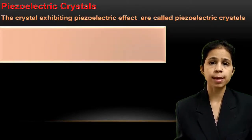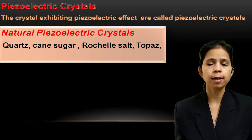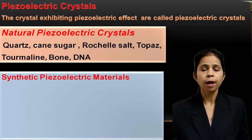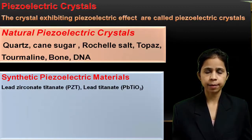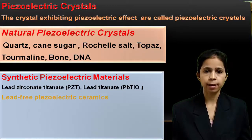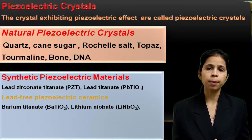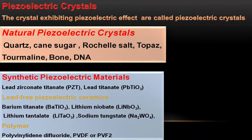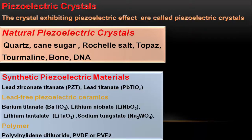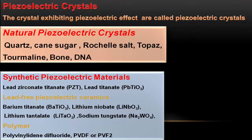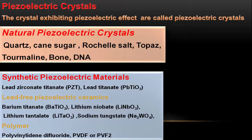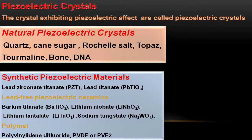Natural piezoelectric crystals include quartz, tourmaline, Rochelle salt, topaz, bone, cane sugar, and DNA. Synthetic piezoelectric materials include lead zirconium titanate (PZT), lead titanate, lead-free ceramics like barium titanate, lanthanum tantalate, lithium niobate, sodium tungstate, and polymers like polyvinylidene difluoride (PVDF). The piezoelectric property in synthetic piezoelectric materials is developed by special polarizing treatment. Synthetic piezoelectric materials are preferred over natural crystals because they are available in different shapes and sizes, can work at low voltages, can operate at temperatures above 300°C, and give more output.